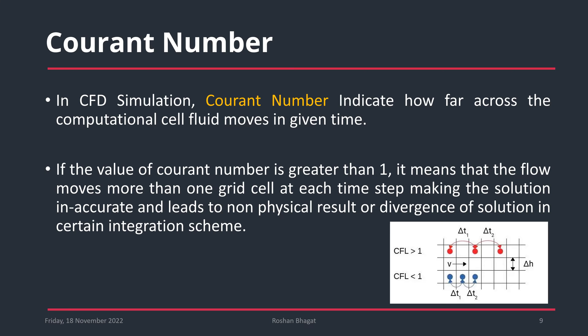As shown in the image, there are two conditions: CFL number greater than 1, and CFL number less than 1. In the first condition, the flow moves across one or more cells in a given time step, which does not happen when the CFL number is less than 1. Therefore, our condition should be to maintain a CFL number less than 1 in order to get accurate and meaningful results.